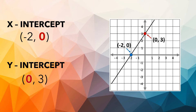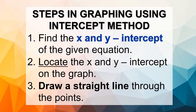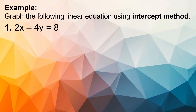Observe the coordinates of x and y-intercept. For x-intercept, it has negative 2 and 0. Please take note that when you're getting the x-intercept, the value of y must always be 0. Similarly, when you get the y-intercept, the value of x must always be 0. Now let's proceed to the steps in graphing using the intercept method. The first step is to find the x and y-intercept of the given equation. Then the second, locate the x and y-intercept on the graph and draw a straight line through the points.